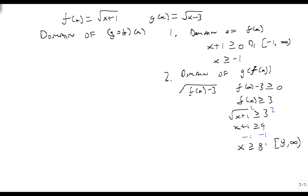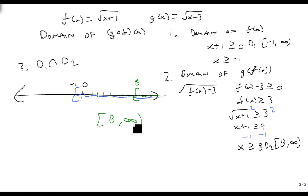So this was d1, and this is d2. Step 3, we take d1 intersected with d2. So d1 says we go from minus 1 up to infinity, and d2 says we go from 8 to infinity. And the only region that's true for both is from 8 to infinity, so this is my domain of g composed with f. And that's how we find our domain.